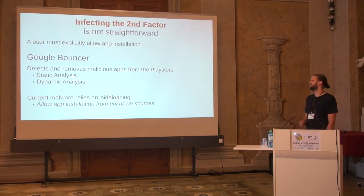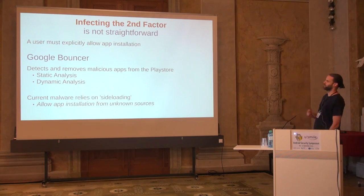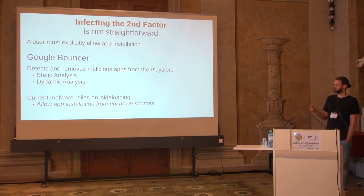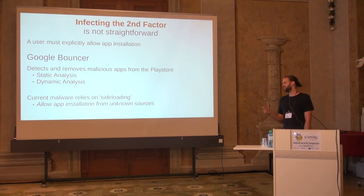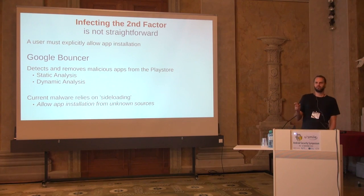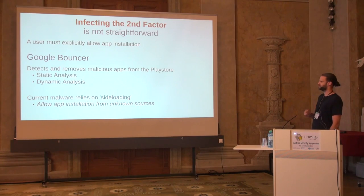However, this attack path is not straightforward. Currently, a user must explicitly allow app installation — you really must click 'yes, I'm going to install this app on my phone.' There's also Google Bouncer, the security feature of Android and the Play Store that detects and removes malicious applications using static and dynamic analysis. Current malware relies on sideloading — the 'allow app installation from unknown sources' option — because that's the only way to host malicious apps outside the Play Store.